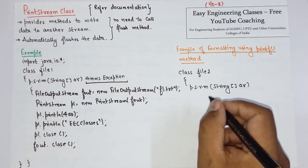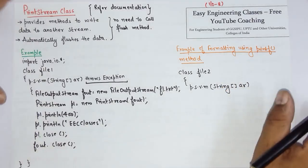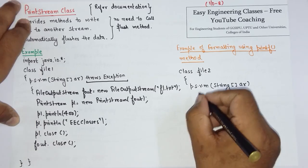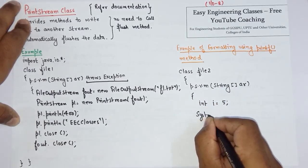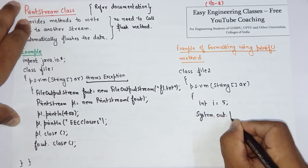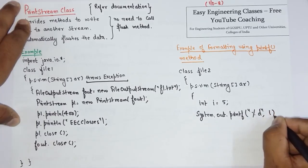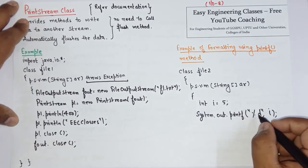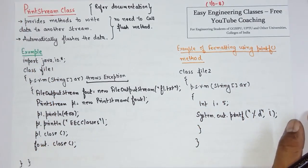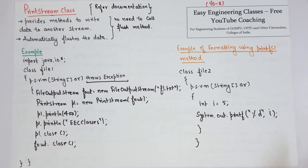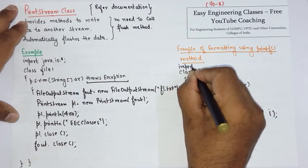Next, you can also format your data as you are pretty much familiar with formatting in C or C++ programming. Suppose there is a variable int i = 5. Then instead of using System.out.println, I can use System.out.printf and format it like you used to do in earlier programming languages like C or C++. So now it is a formatted output using the printf method present in PrintStream. It is a method present in the java.io.PrintStream class, so you have to import the java.io package.